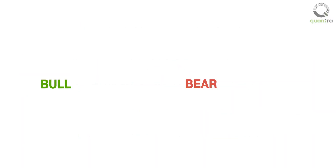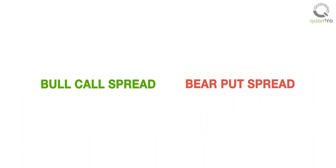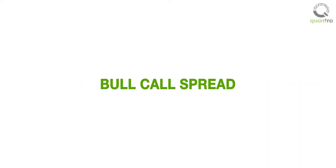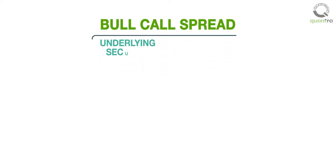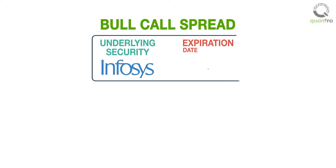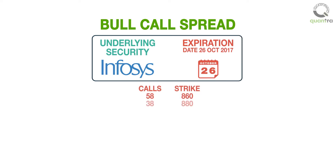In this video lecture, we will go through two commonly used option trading strategies, which involve simultaneously buying and selling of different options. The first strategy that we are going to discuss is the bull call spread. The strategy involves options on the same underlying security, with the same expiration date, but with different strike prices. Therefore, this strategy is also known as a vertical spread.